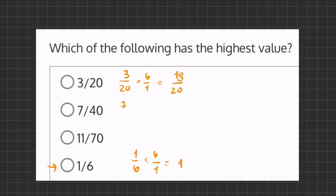Now if we go to our second one, seven over 40, and we multiply by six, we get 42 over 40.